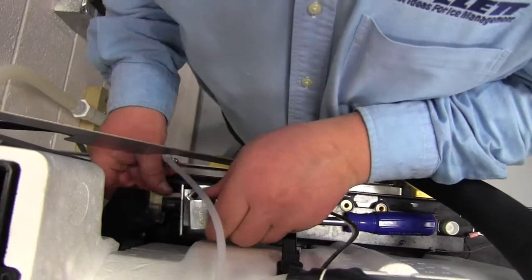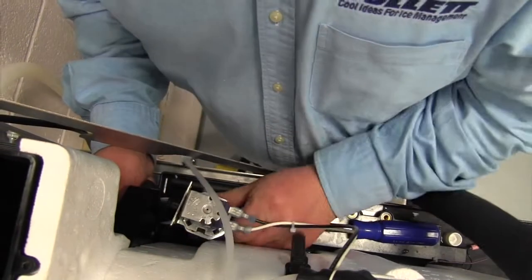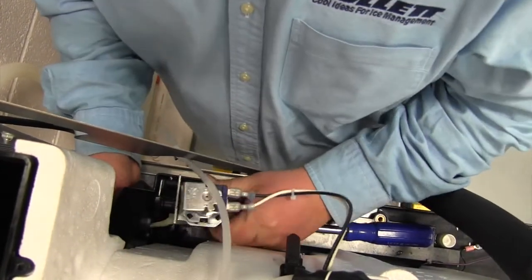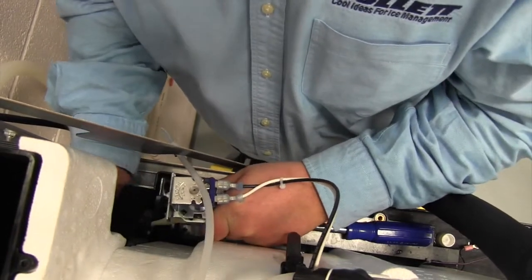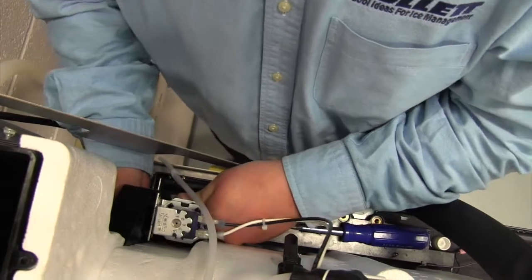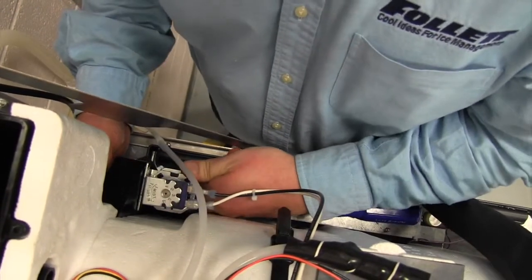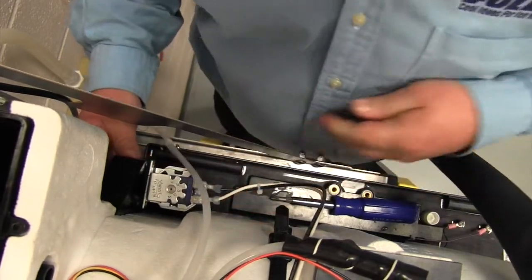Then we're going to reinstall the purge valve. First we have to get the tube for the reservoir. We have one screw and then we also have a tab on the bushing housing to keep the purge valve level.